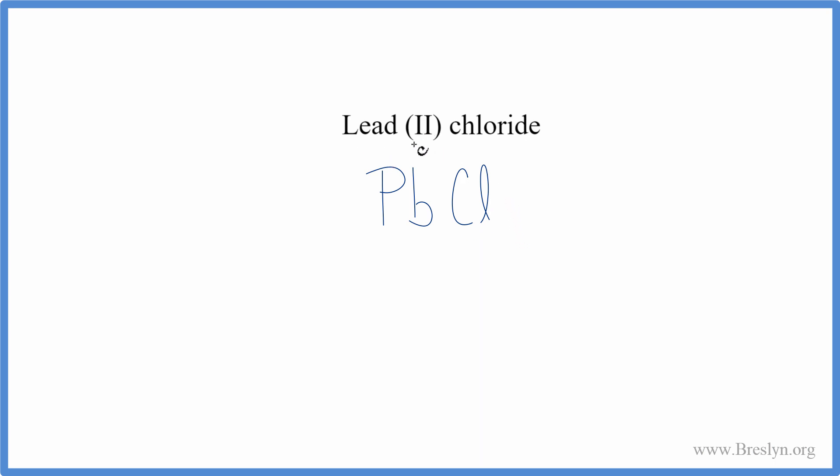Lead, that tells us right in the name that it has a plus two, because of the Roman numeral. So lead's two plus, that's its ionic charge. Chlorine on the periodic table, that's one minus.